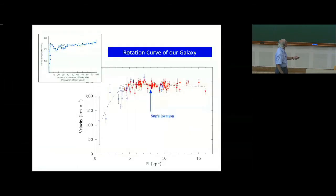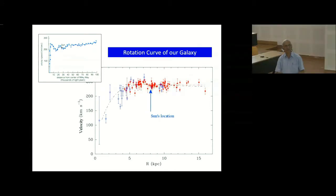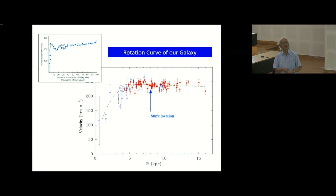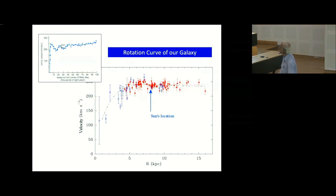The rotation curve has two parts: in the central regions of the galaxy the velocity increases with distance, and after a while it becomes constant. That is where we are — about 8,000–10,000 parsecs from the center — and it continues to be flat. The rotation curve has been deduced more recently to very large distances, out to 100,000 light years, and it is still flat — if anything, it is rising and not falling.